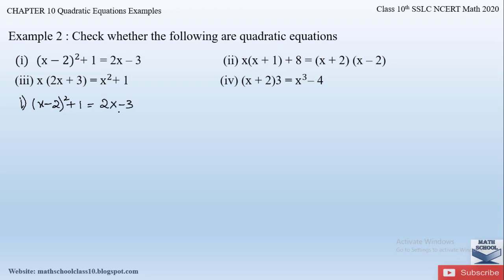Let us simplify this equation and find out whether it forms a quadratic equation or not. First, let us take the left-hand side. We have (x − 2)² + 1, which is of the (a − b)² form. The formula for (a − b)² is a² − 2ab + b². Here a = x and b = 2.